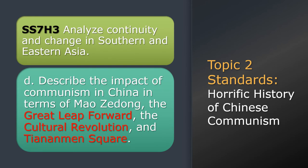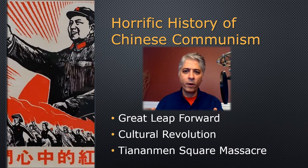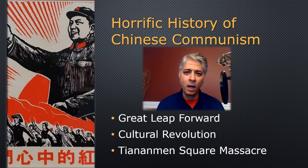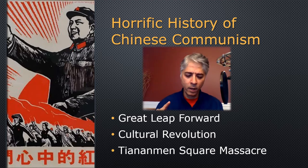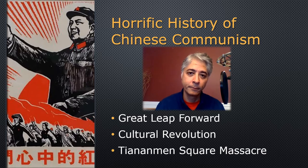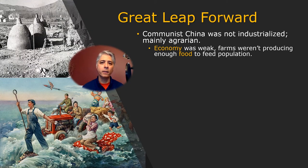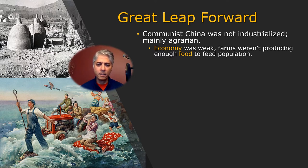On to Topic 2: the horrific history of Chinese communism. We have three major events in Chinese communism, and they were all horrible — all events that lead to people having fewer rights and to the deaths of many, many people. We're going to start with the Great Leap Forward. Something to understand about China when the communists took over is that China was not industrialized back then. China in the late 1940s and 1950s was an agrarian society — meaning farming-based.